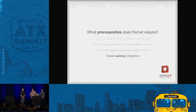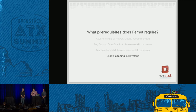Caching is not technically a prerequisite, but Keystone does a lot more work to validate a Fernet token than a UUID token. So the very first thing we did after releasing with Fernet is we turned caching on. This saves Keystone from having to do a ton of work.